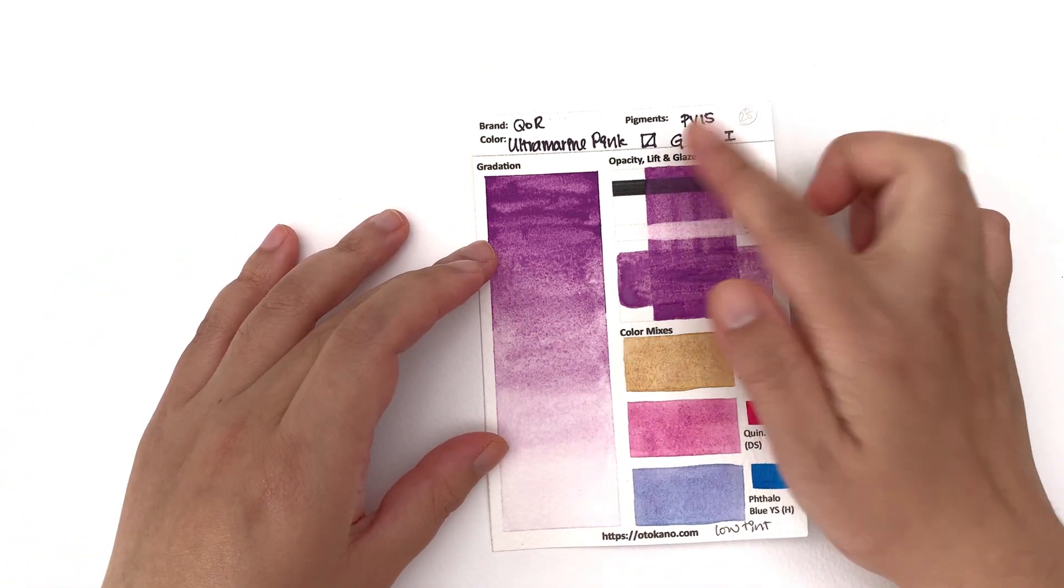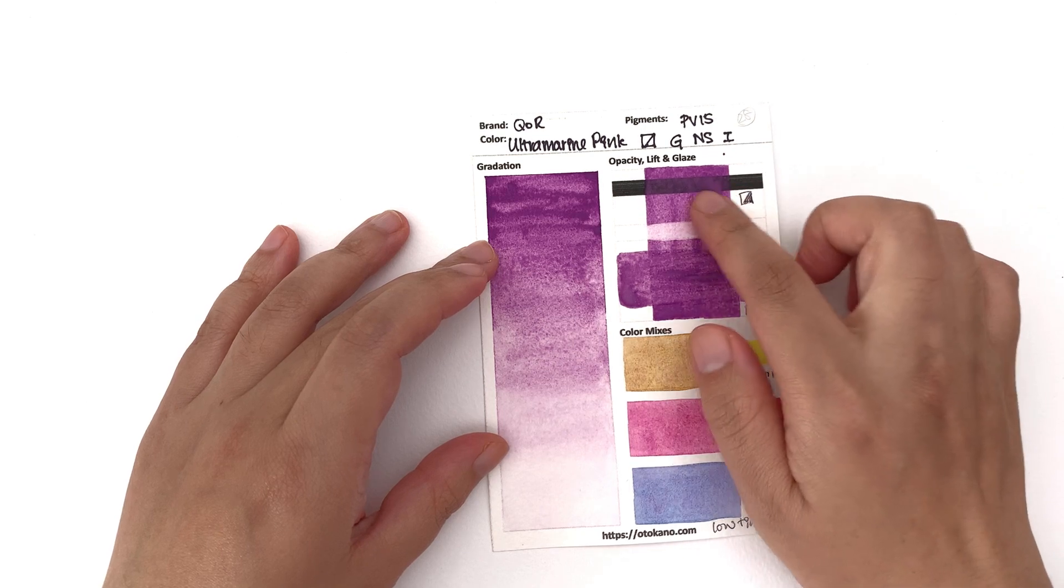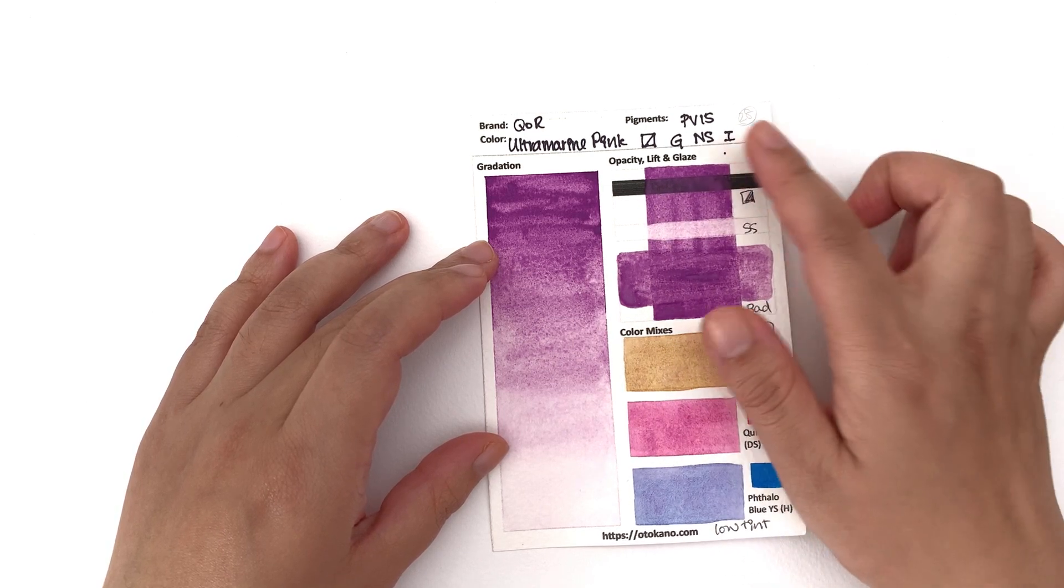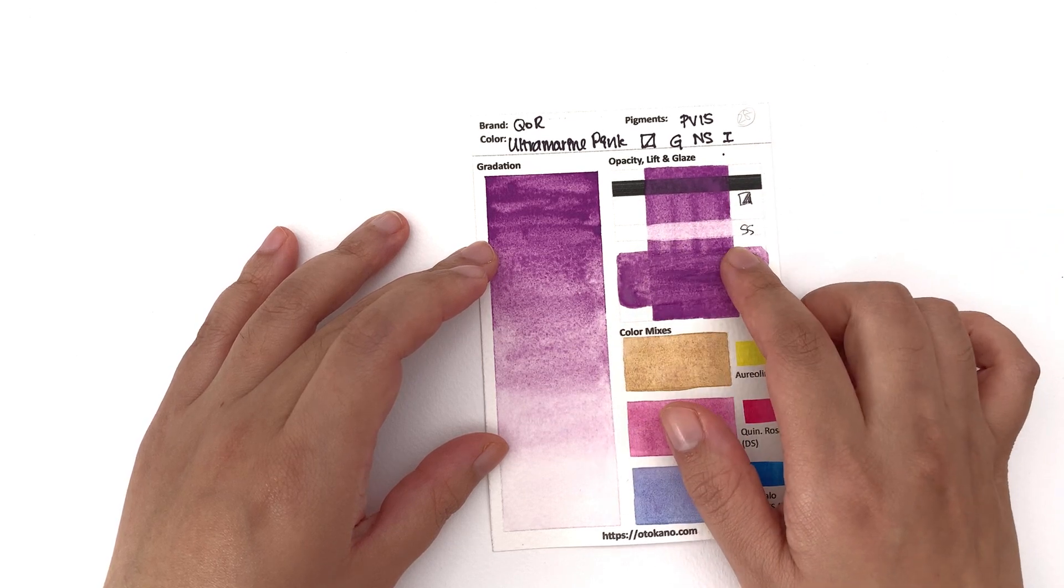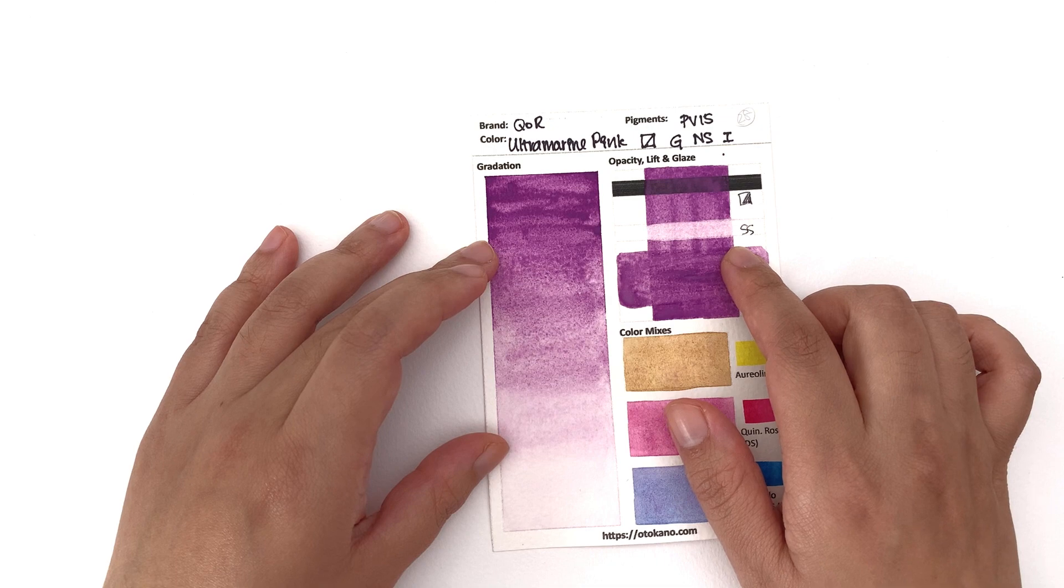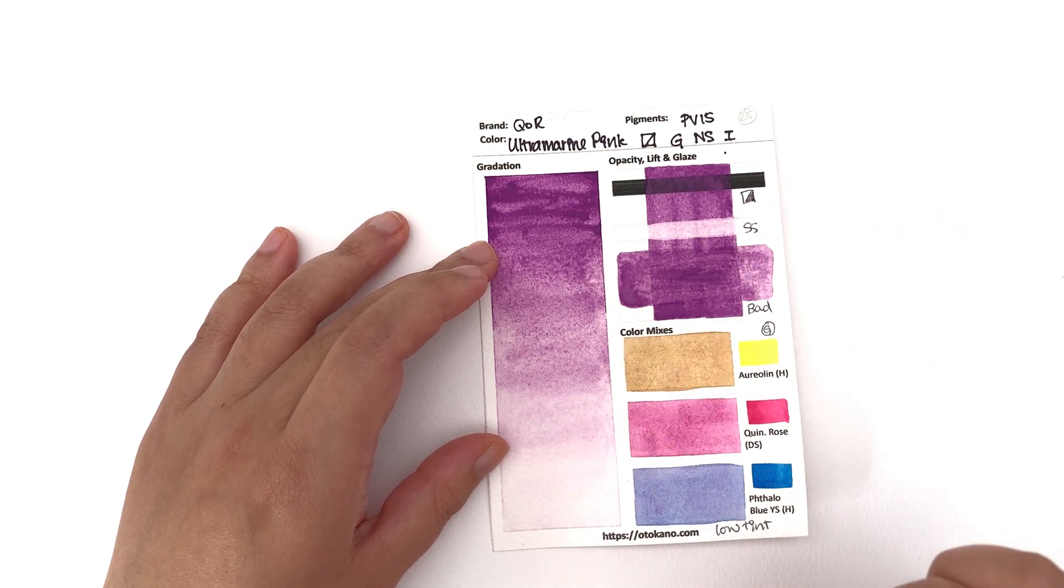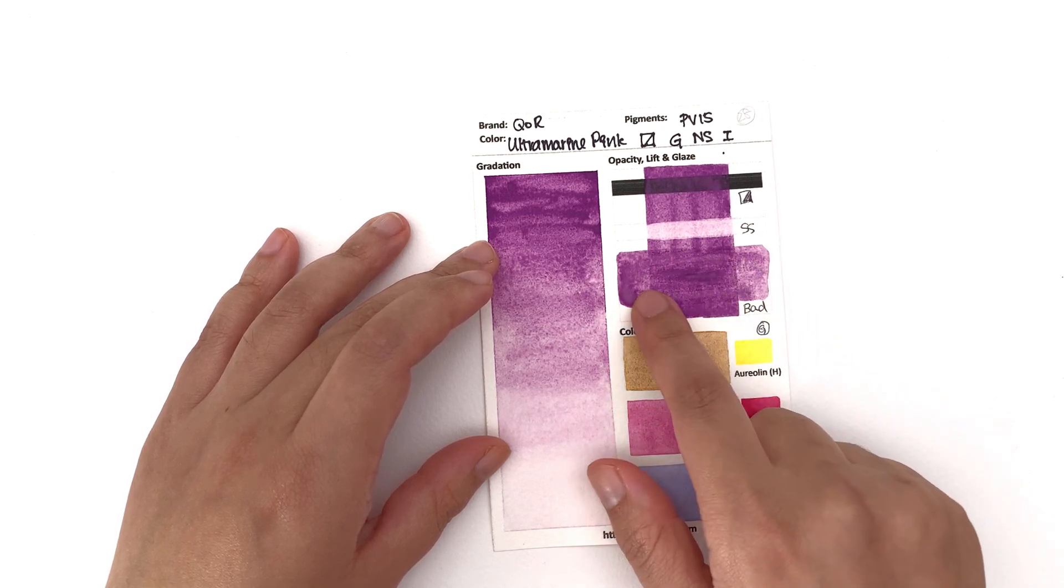It's classified as semi-transparent and I would say it's semi-opaque. You get some heavy deposits happening around here. It's classified as non-staining. I would say it's semi-staining. It's quite a lot of color still there even after nine brush strokes to lift it out.